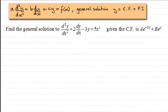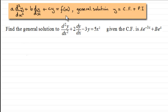Welcome to another video in my series on solving second-order linear differential equations which equal some function of x. In the first video I showed you that the general solution was of the form y equals the complementary function plus the particular integral — CF plus PI for short. In this video we're looking at how we handle questions where f(x) equals a quadratic function.